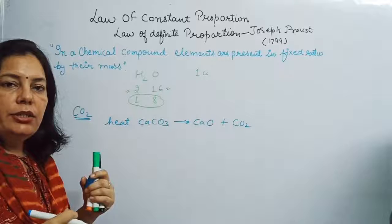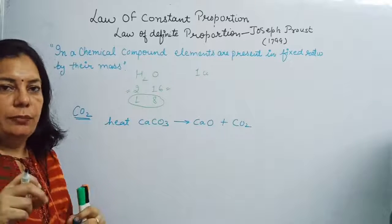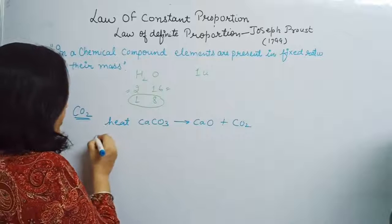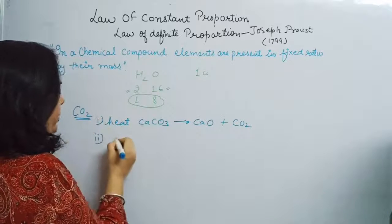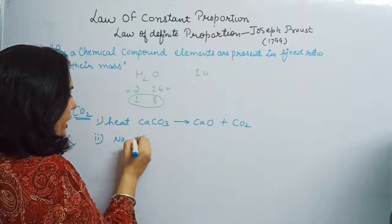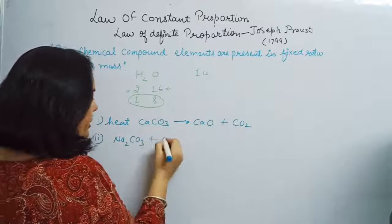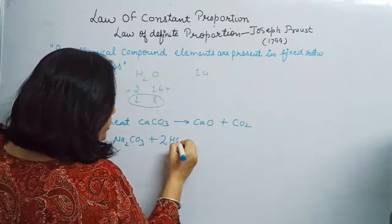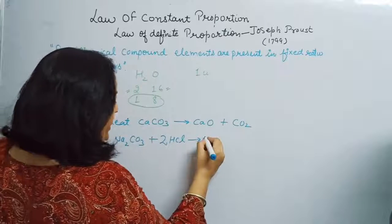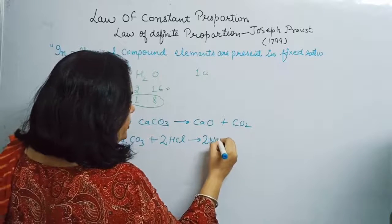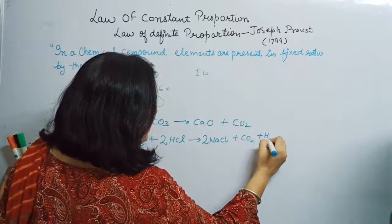The second method is when a metal carbonate reacts with acid. For example, Na2CO3 reacts with hydrochloric acid. In this process, we get sodium chloride plus carbon dioxide plus water.